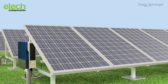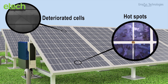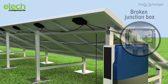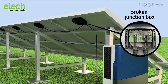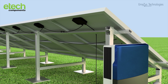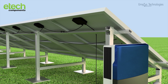Faults on the direct current side may include hotspots, which occur when electrical power is dissipated locally in PV modules. Deteriorated cells, which occur frequently and cause energy loss. Junction box failure, which can lead to substantial losses. Bypass diodes must also be functional. Corroded connectors, which frequently lead to series resistance issues and subsequent losses. Damaged cables and other insulation problems, which cause grounding faults that lead to energy loss from full strings.